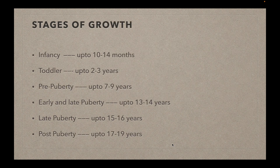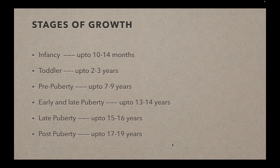For convenience in understanding age estimation, we can divide the whole growth phase into six stages: infancy, up to 10 to 14 months; toddler, up to 2 to 3 years; pre-puberty, up to 7 to 9 years; early puberty, up to 13 to 14 years; late puberty, up to 15 to 16 years; and finally the post-pubertal phase, up to 17 to 19 years.